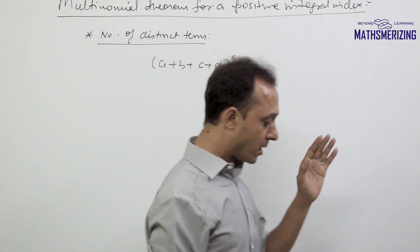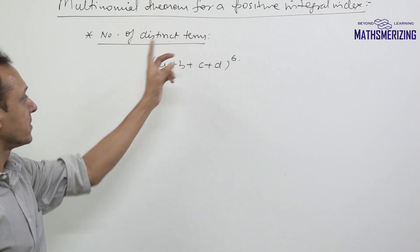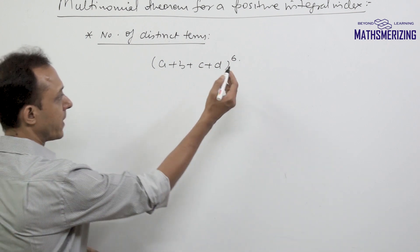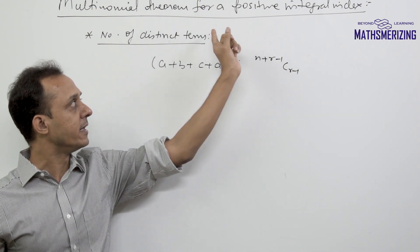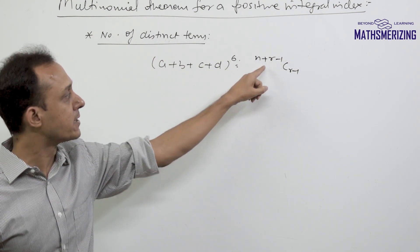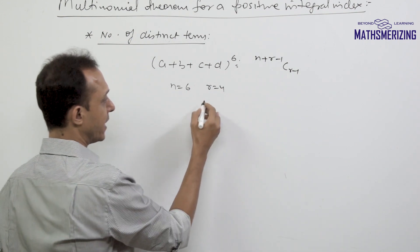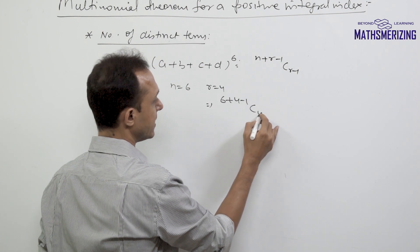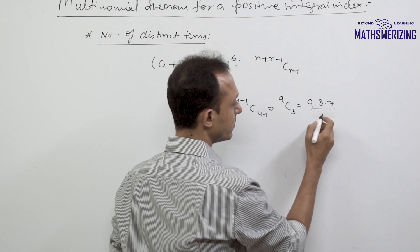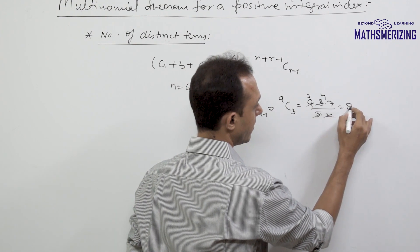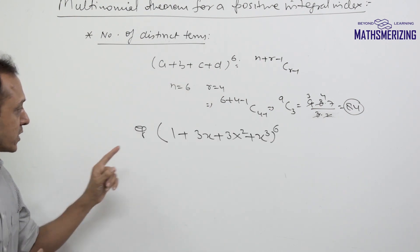An important clarification about the number of distinct terms: in the expansion of a plus b plus c plus d to the power 6, where a, b, c, d are separate distinct variables, the formula n plus r minus 1 C r minus 1 applies. Here n=6 and r=4, giving 6 plus 4 minus 1 C 4 minus 1, which is 9C3. That equals 9×8×7 divided by 3×2×1, giving 84 distinct terms.